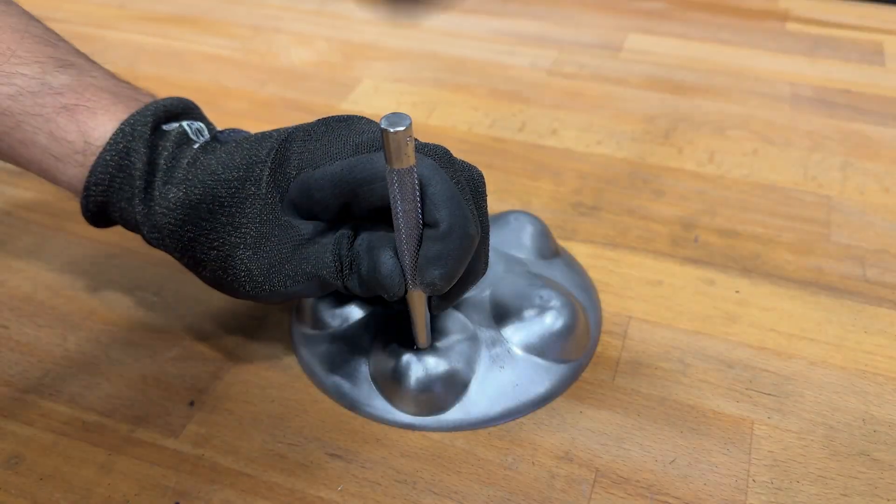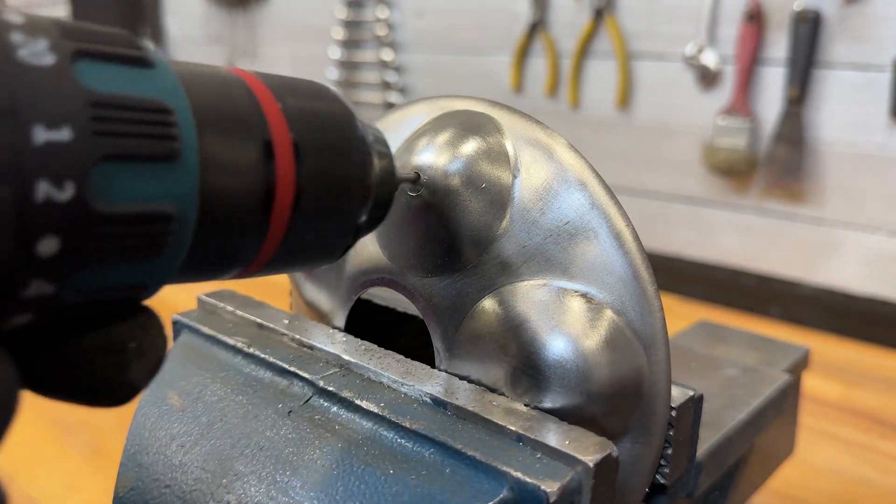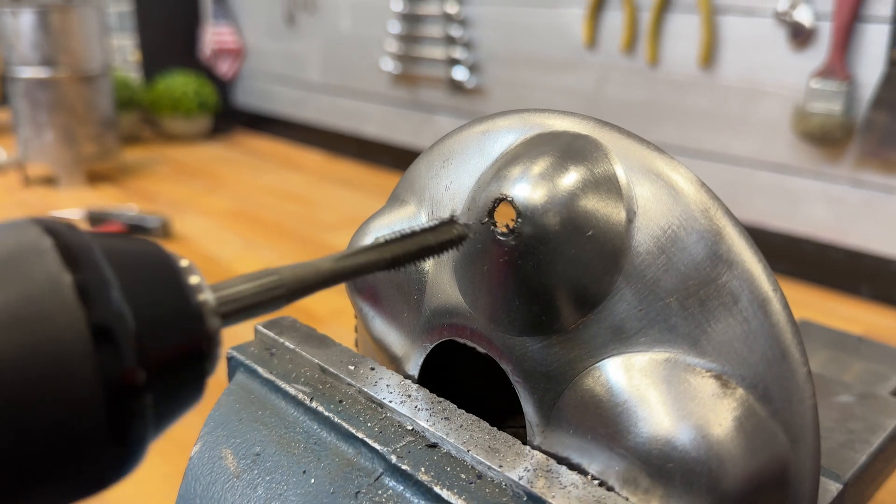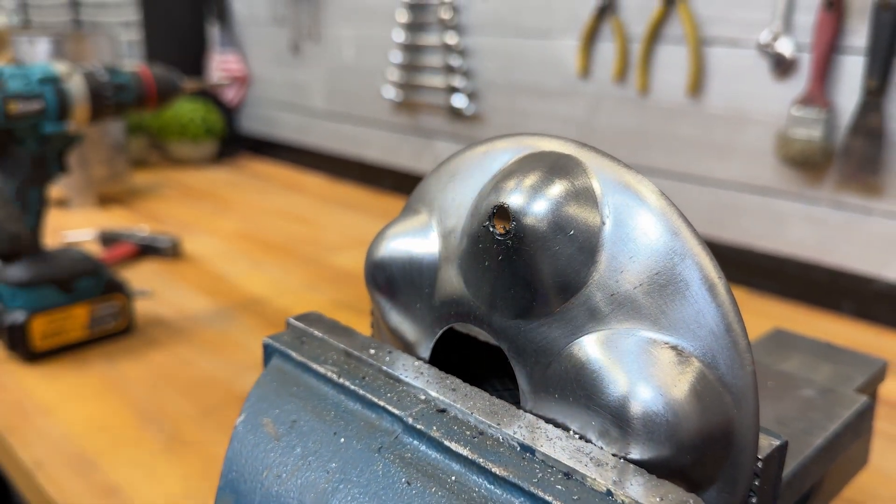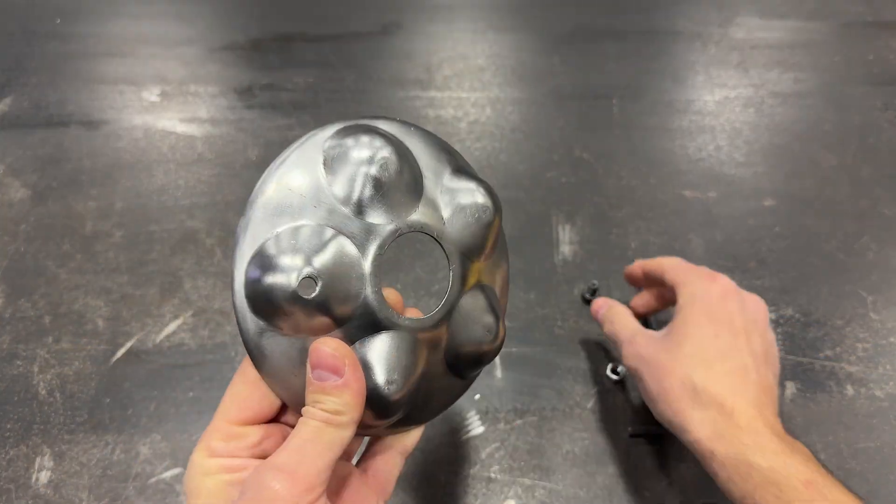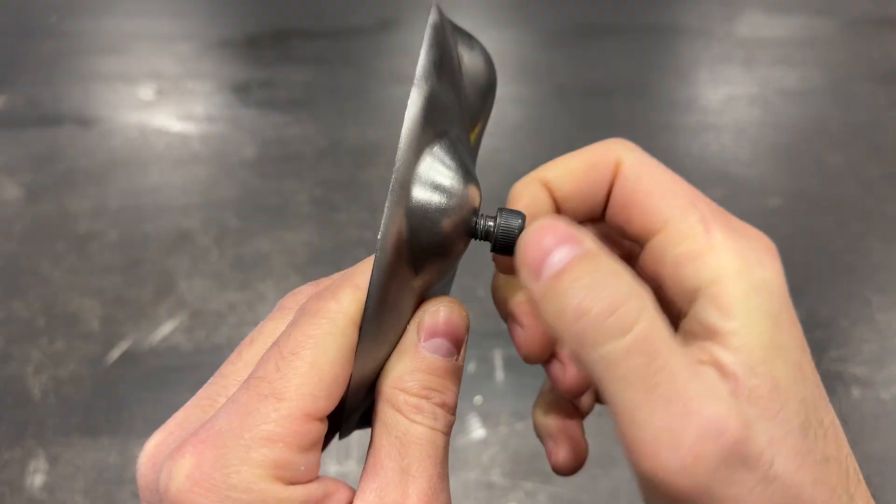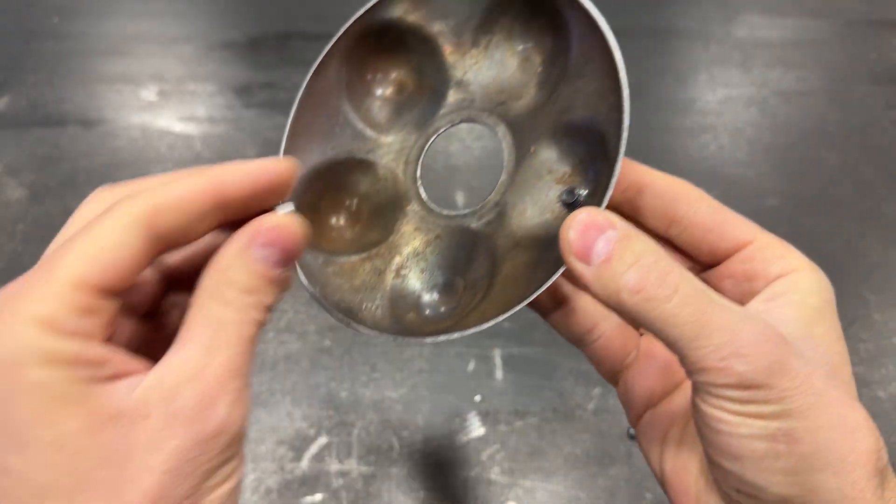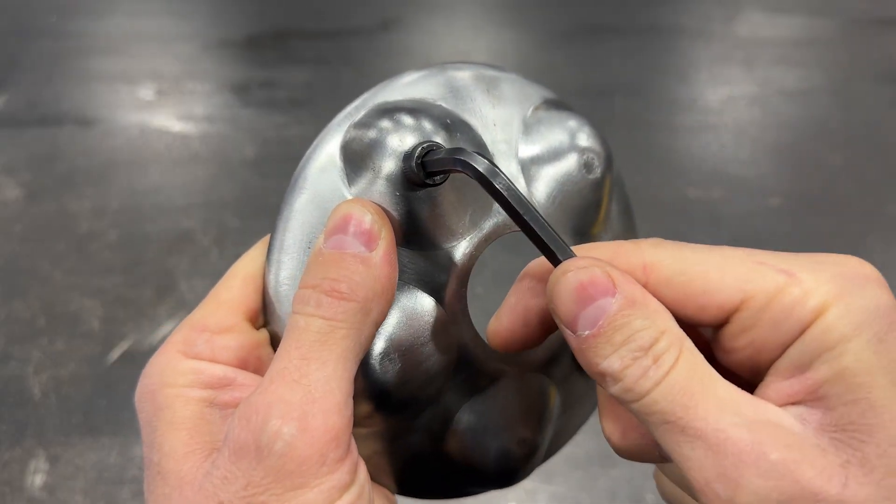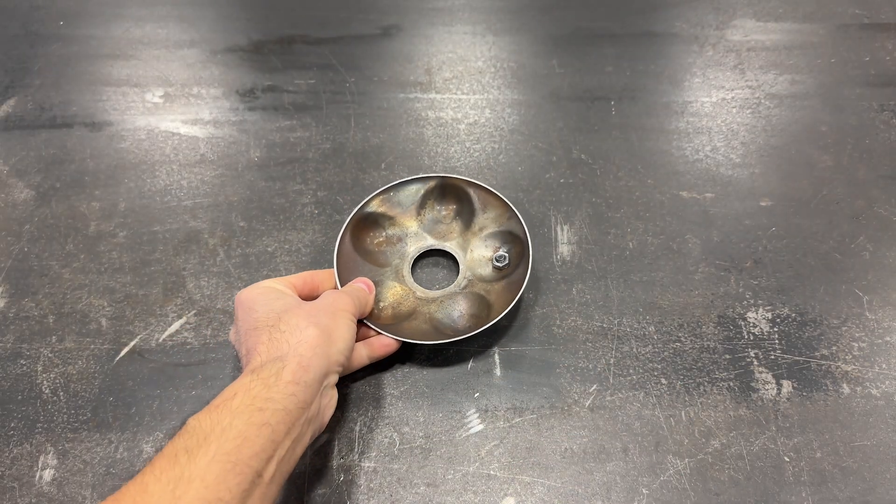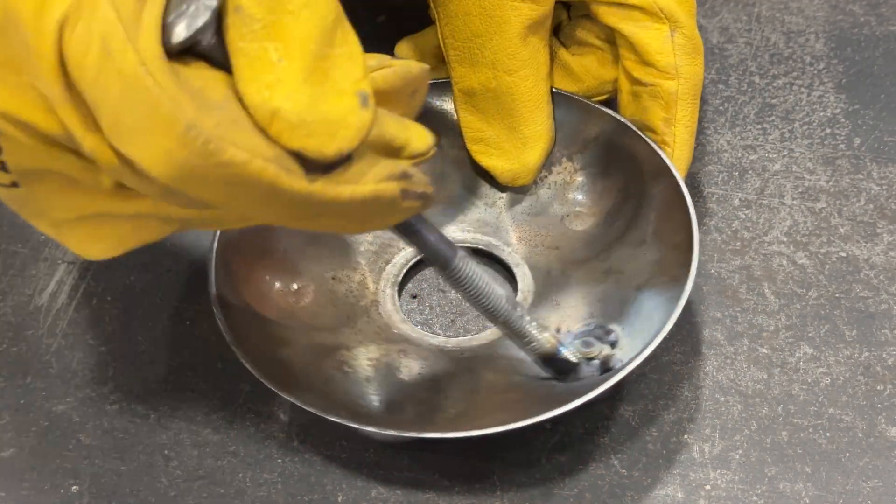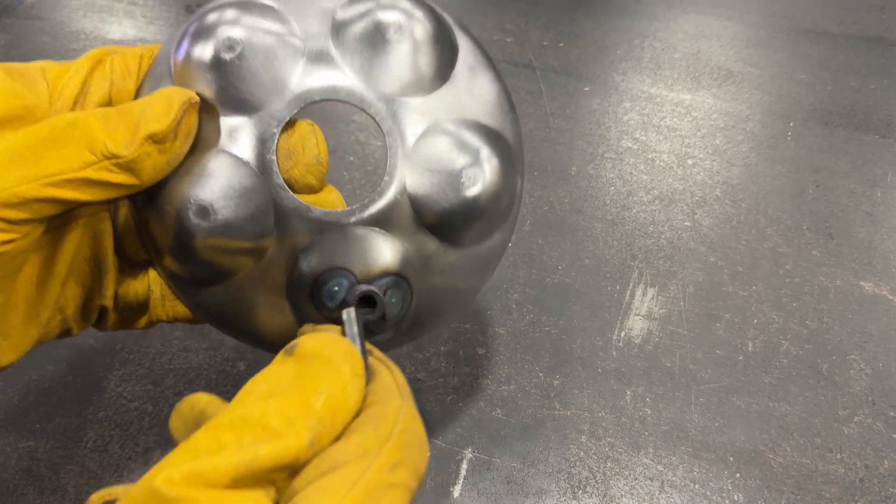We'll mark another hole, which we'll drill and thread to a size 8 thread. We'll screw in a size 8 bolt. And on the other end, we'll screw on a nut, which we'll later weld. We can now remove the bolt.